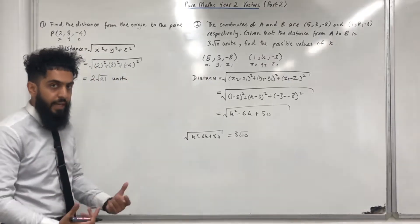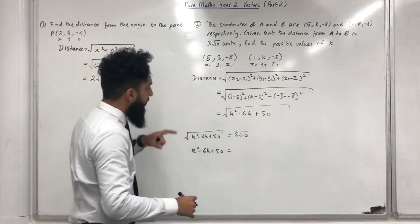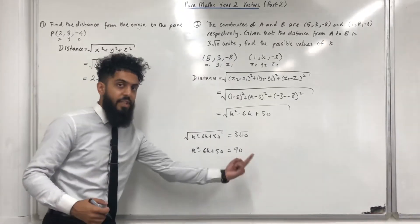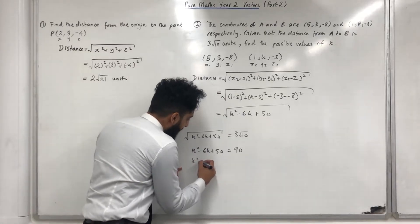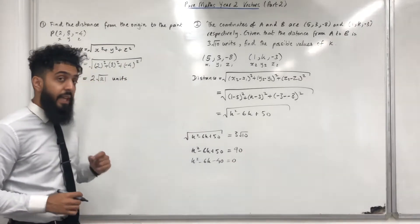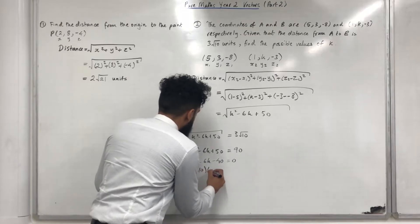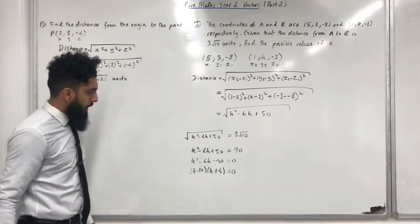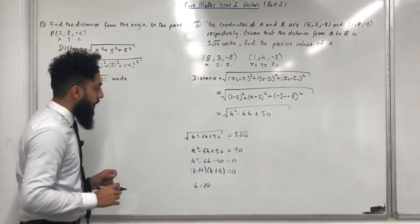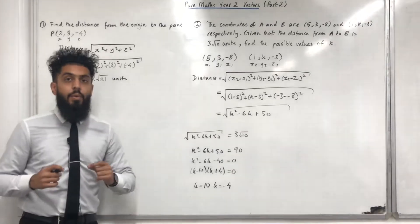Now I square both sides: the left-hand side gives k squared minus 6k plus 50, and the right-hand side, (3 square root 10) squared, gives 90. Taking everything to the left-hand side gives k squared minus 6k minus 40 equals 0. Factorising: (k minus 10)(k plus 4) equals 0. So k minus 10 equals 0, hence k equals 10; and k plus 4 equals 0, hence k equals minus 4. The possible values of k are 10 and minus 4.